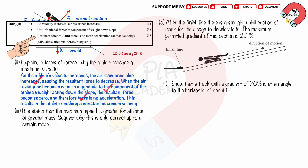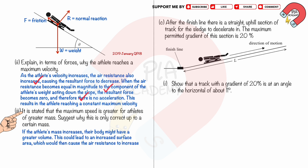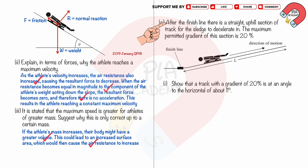Part 3: It is stated that the maximum speed is greater for athletes of greater mass. Suggest why this is only correct up to a certain mass. If the athlete's mass increases, their body might have a greater volume, which could lead to an increased surface area and therefore increased air resistance. You get 2 marks for: a larger person or mass would have a larger area or volume, and therefore air resistance will be increased.